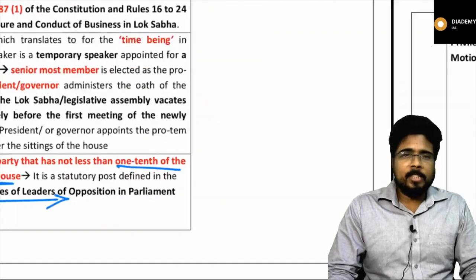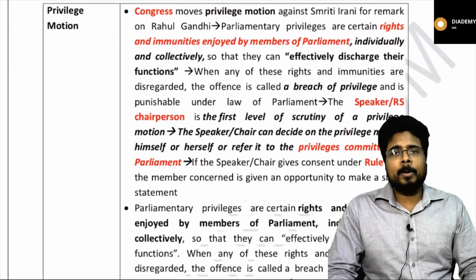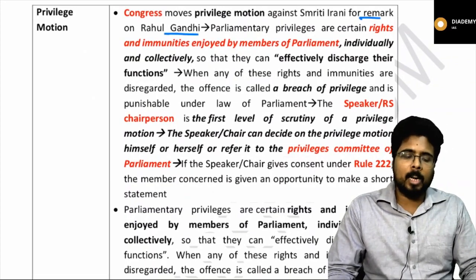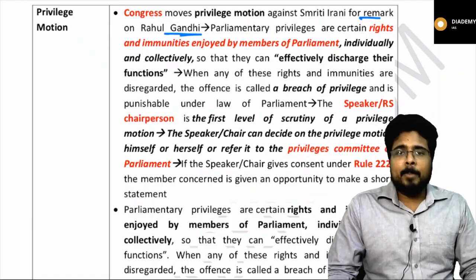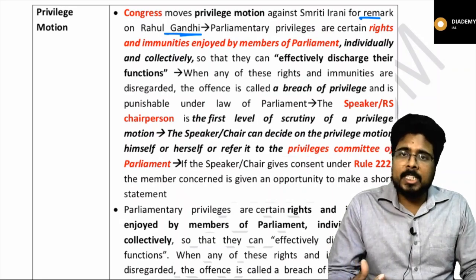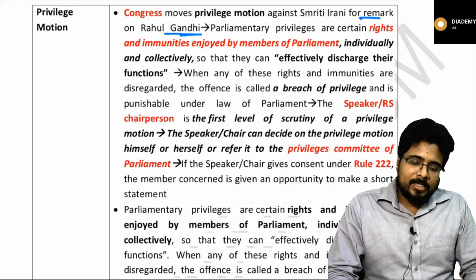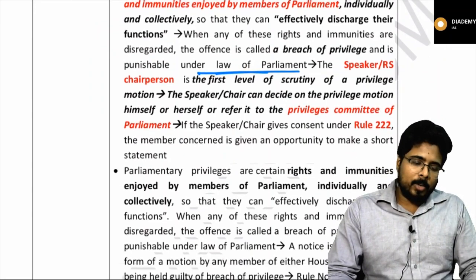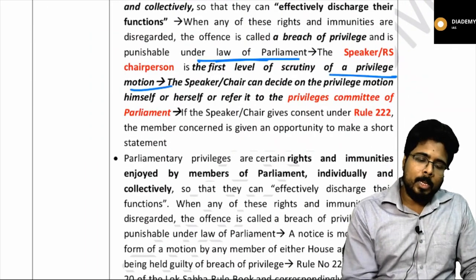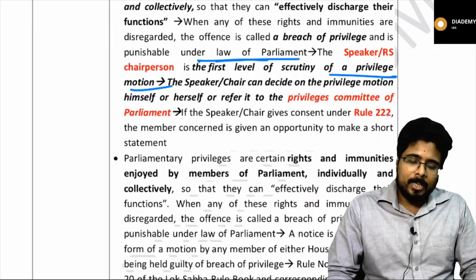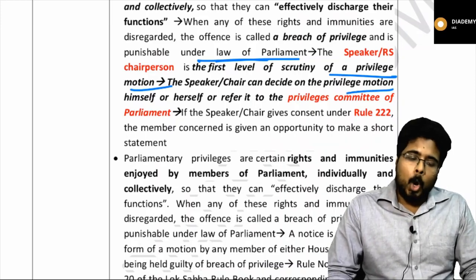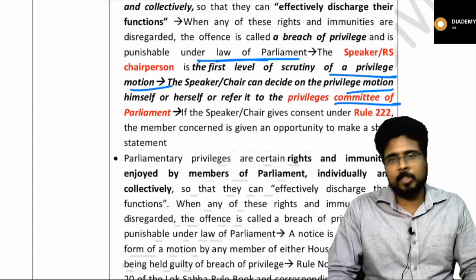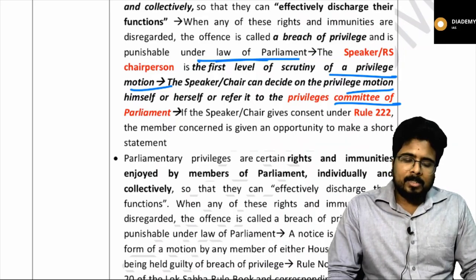Regarding the privilege motion: Congress moved a privilege motion against Smriti Irani for a remark on Rahul Gandhi. Parliamentary privileges are certain rights and immunities enjoyed by members of parliament individually as well as collectively. If anyone feels their privileges are being breached, a privilege motion can be moved against another member. The offense is called breach of privilege and is punishable under the law of parliament. The Speaker or the Chairman of Rajya Sabha is the first level of scrutiny, and they can decide on the privilege motion or refer it to a privilege committee. If the Speaker gives consent under Rule 222, the member concerned is given an opportunity to make a short statement.